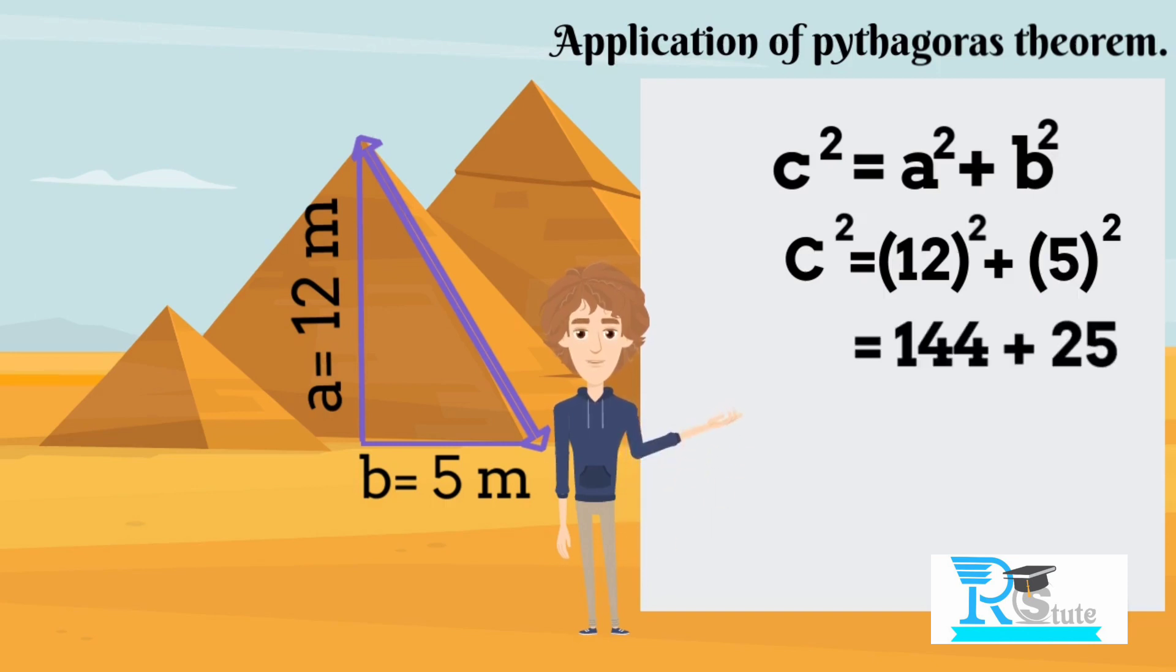The square of 12 is 144 and the square of 5 is 25. If we add these two numbers, we get 169. Taking the square root, we get C equals 13 meters. I hope you understood the concept.